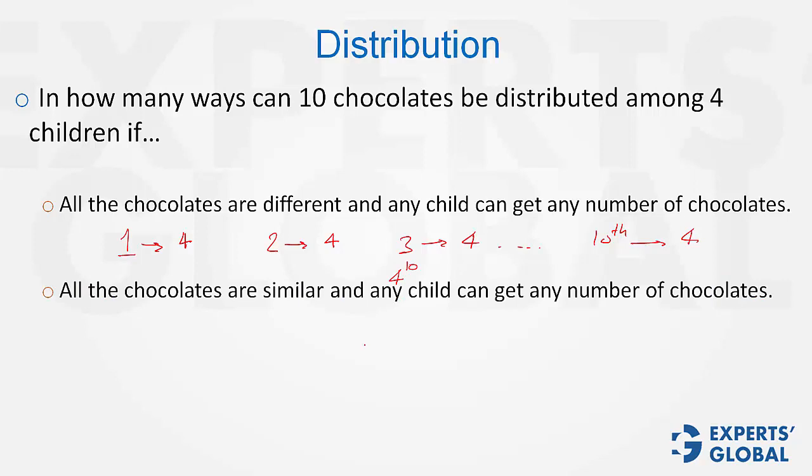Second example, the chocolates are similar and any child can get any number of chocolates. So here it is not about which chocolate goes to which child, it's only about which child gets how many chocolates. So there are 10 chocolates, similar, and we have to make 4 parts.